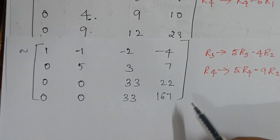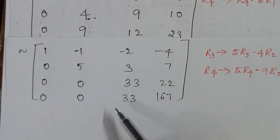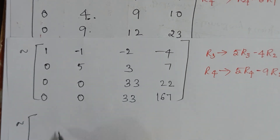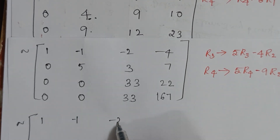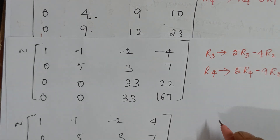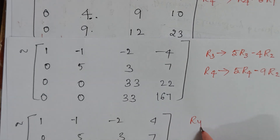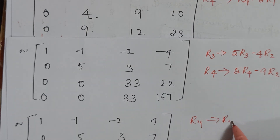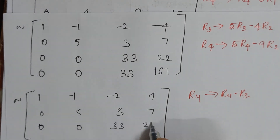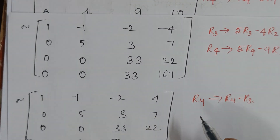Now I perform one more operation to reduce this matrix further. I perform R4 → R4 - R3. This gives row 4 as: 0, 0, 33-33=0, and the last element also becomes 0. So row 4 becomes all zeros.